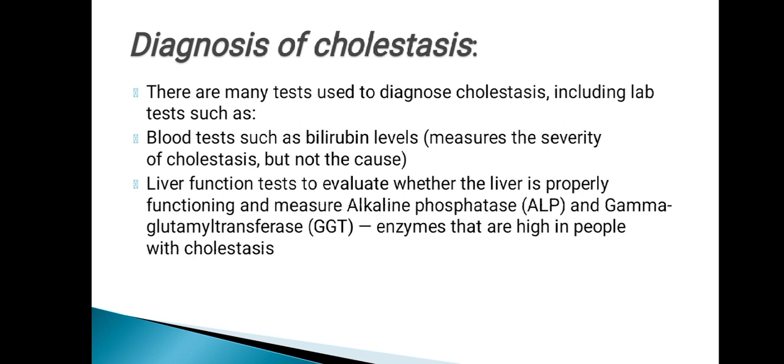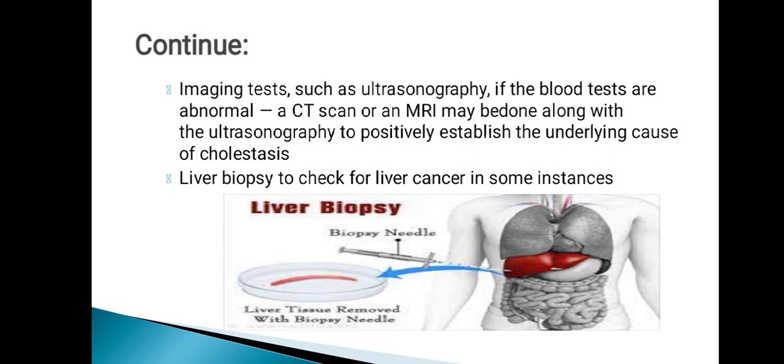To diagnose cholestasis, blood tests are used such as bilirubin level to measure the severity but not the cause. Liver function tests evaluate whether the liver is properly functioning and measure ALP (alkaline phosphatase) and GTP (gamma-glutamyl transferase) enzymes, which are elevated in people with cholestasis. High levels of these enzymes indicate a likelihood of cholestasis.